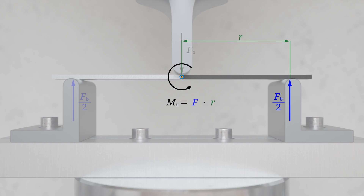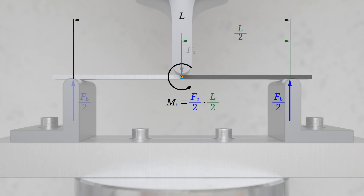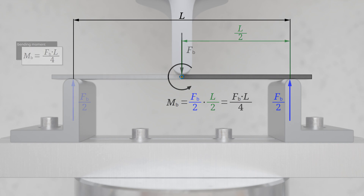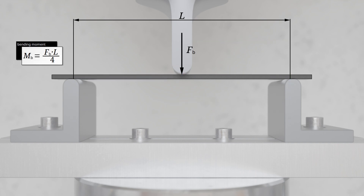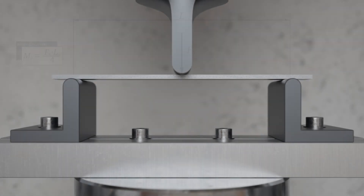The torque is generally determined by the product of the force and the lever arm. In this case, the force corresponds to the force of the support, or half of the bending force. The lever arm is equal to half the span of the two supports. In this way, we finally obtain the shown formula for calculating the maximum bending moment, which is only dependent on the bending force and the distance between the supports.